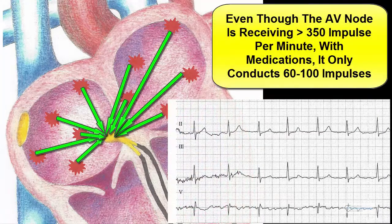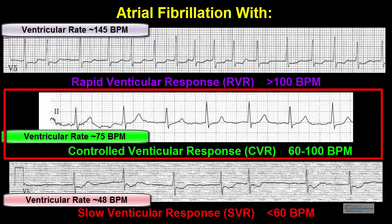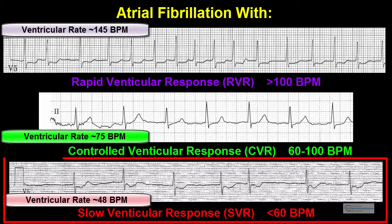Instead of conducting 120 to 180 beats per minute, the AV node will conduct 60 to 100 beats per minute. If the patient is taking medications that slow the AV node, or the patient's AV node is diseased, then the ventricular response may be 60 to 100 beats per minute. In this case, we refer to this as atrial fibrillation with a controlled ventricular response. If the QRS complexes are going at less than 60 beats per minute, we refer to this as atrial fibrillation with a slow ventricular response.